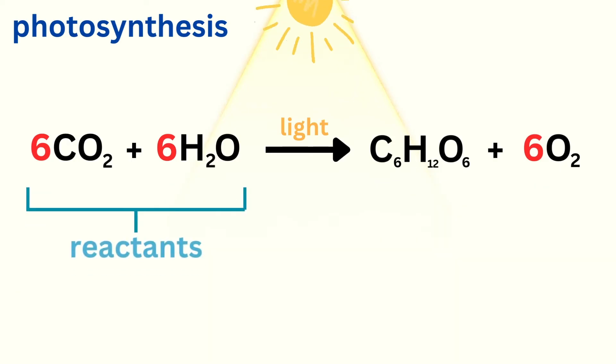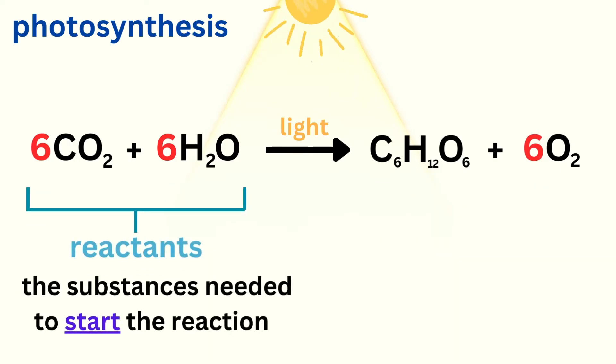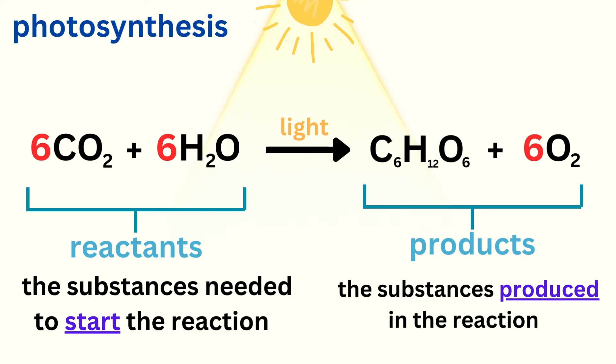In this equation, the reactants are the substances needed to start the reaction, carbon dioxide and water. While the products are glucose and oxygen, the substances produced in the chemical reaction.